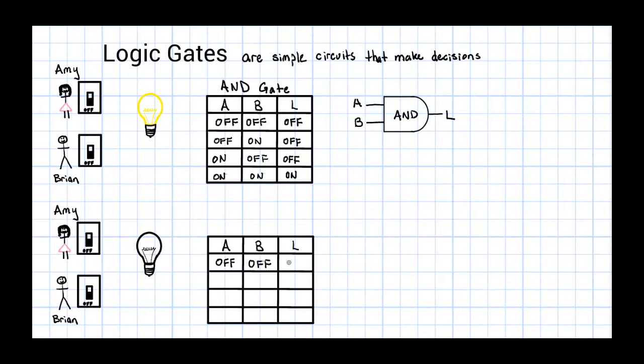If both Amy and Brian have their switches off, then the light bulb is off. If Amy has her switch off but Brian has his switch on, the light bulb will turn on. Likewise, if Amy has her switch on but Brian has his off, the light bulb will also turn on. If both Amy and Brian have their switches on, the light bulb remains on.